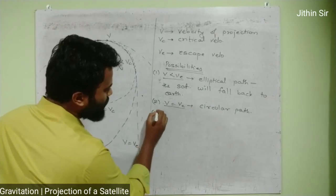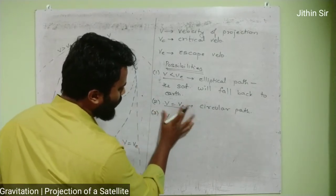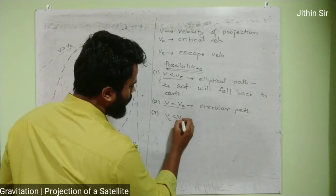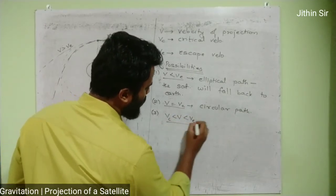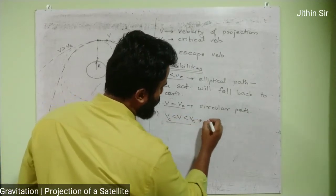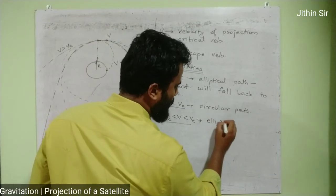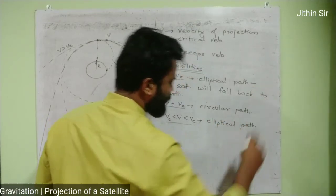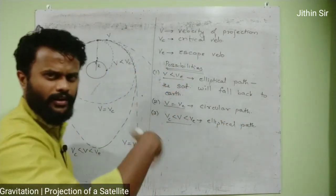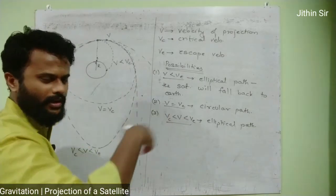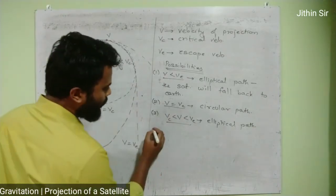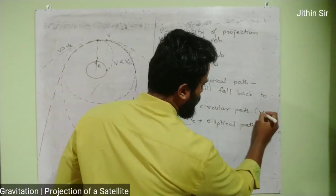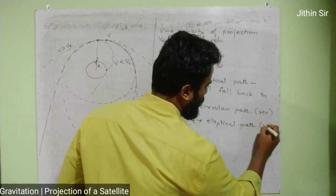Third case: if velocity V is between critical velocity Vc and escape velocity Ve, the satellite takes an elliptical path and continues to revolve — it will not fall back; it will revolve around the earth.